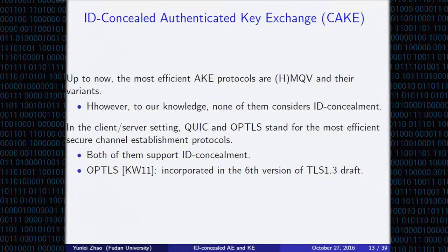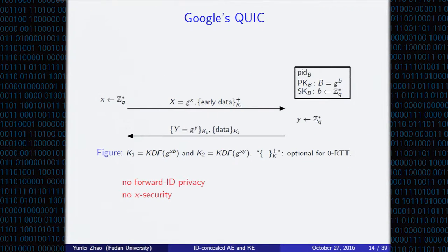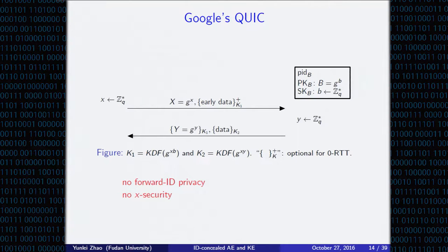In the client-server setting, QUIC and OPTS stand for the most efficient secure channel establishment protocols. Both of them support identity privacy, and OPTS is also incorporated in the TLS 1.3 draft. Looking at the Google QUIC protocol's basic cost structure, although it considers identity concealment, it does not enjoy forward ID privacy: if the server's static private key small b is exposed, then one can reveal the identity of the client. Also, it does not enjoy KCI security, because both K1 and K2 can be computed from the value of small x.